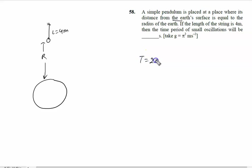When the length is negligible, the time period formula is 2π√(l/g). The time period of oscillation will be calculated, and only gravity will change.